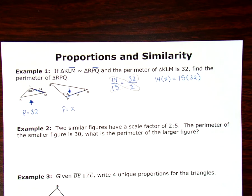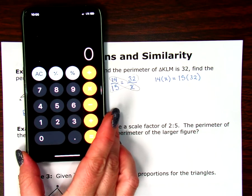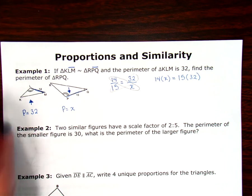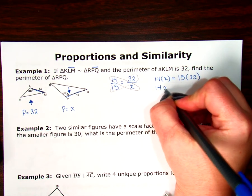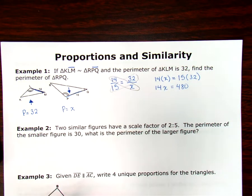So 15 times 32. And again, I'm not using anything fancy. I've just got my cell phone here. 15 times 32 is 480. So 14X equals 480. Divide both sides by 14.